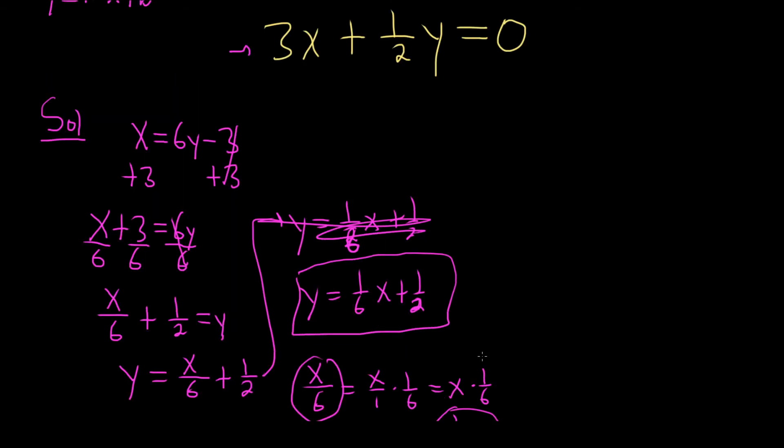Now let's solve the other one for y. I'll write it again: 3x plus 1 half y equals 0. We'll subtract 3x from both sides. That gives us 1 half y equals minus 3x.